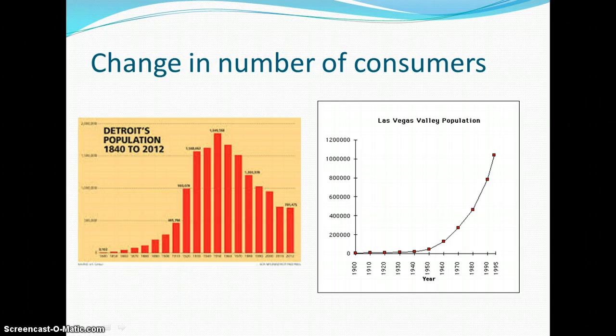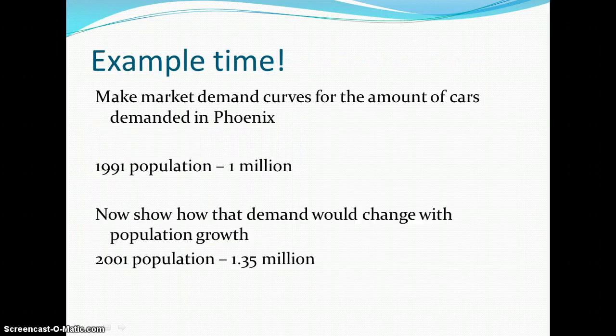A lot of this was because of General Motors moving their car production to other countries. More consumers means more demand. Fewer consumers means less demand. That's the way you want to think about this.